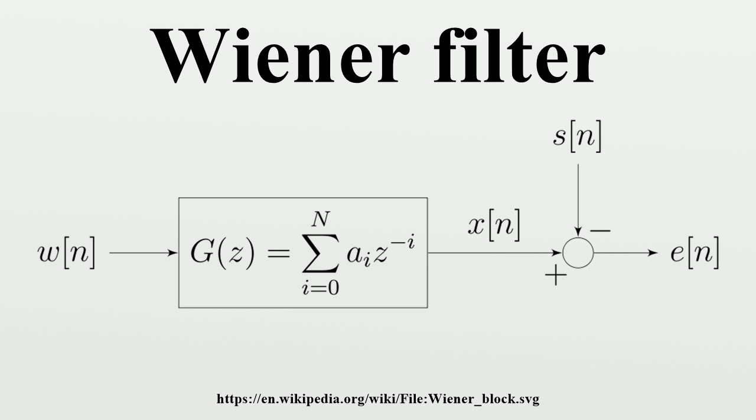History: The filter was proposed by Norbert Wiener during the 1940s and published in 1949. The discrete-time equivalent of Wiener's work was derived independently by Andrey Kolmogorov and published in 1941. Hence the theory is often called the Wiener-Kolmogorov filtering theory. The Wiener filter was the first statistically designed filter to be proposed and subsequently gave rise to many others including the Kalman filter.